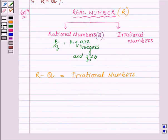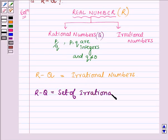And thus R minus Q is the set of all irrational numbers. So this completes the solution, hope you enjoyed it, take care and have a good day.